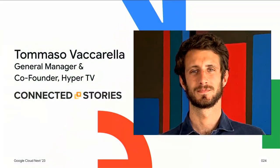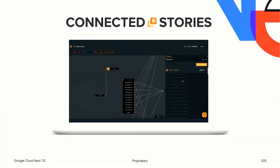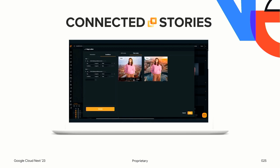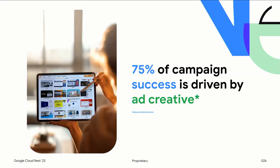Thank you, Avanti. I'm Tommaso Vaccarella, general manager and co-founder of Connected Stories. Today I want to walk you through a real-life enterprise use case of how we use image description and video description within our platform. Connected Stories is a solution for building, personalizing, and optimizing advertising creative at scale by combining the power of creative and generative AI — essentially removing the complexity and democratizing access to data-driven creative. Why is personalizing creative important? Media marketers have only focused on optimizing targeting and inventory, whereas the majority of campaign success is actually derived by the effectiveness of the creative.